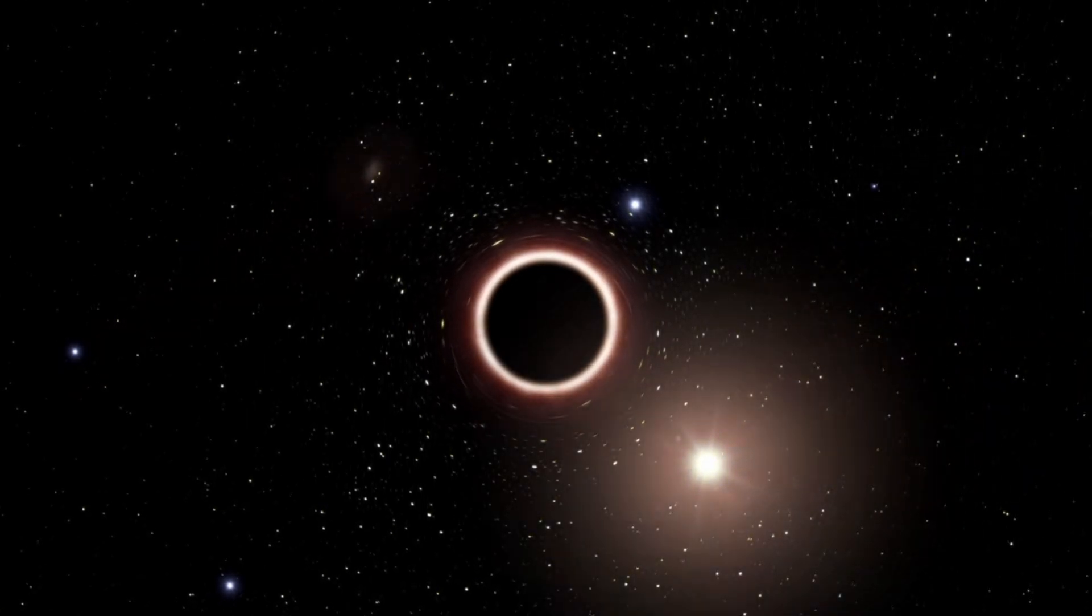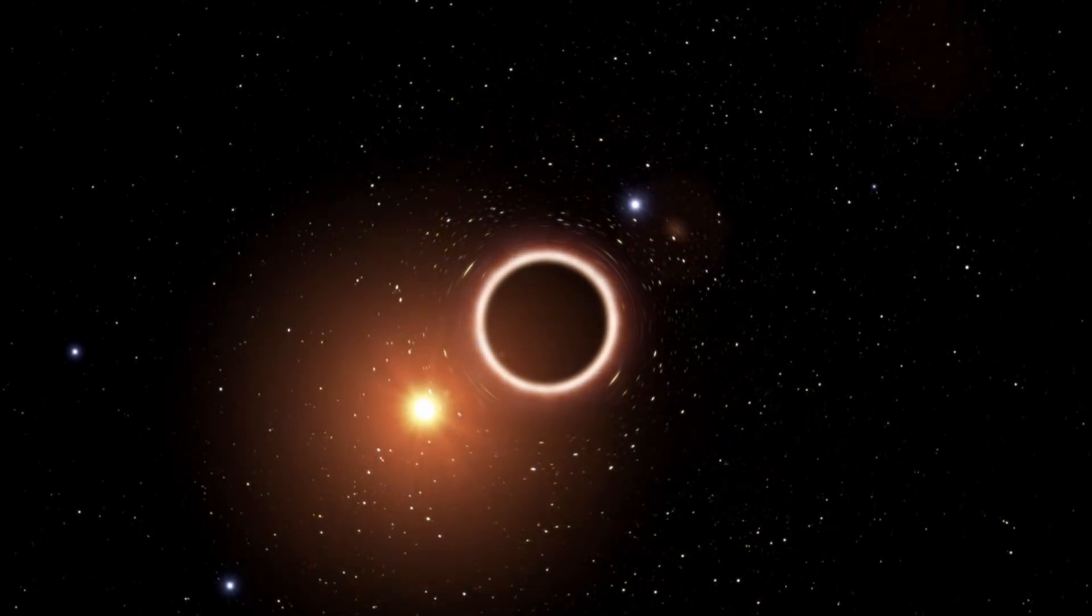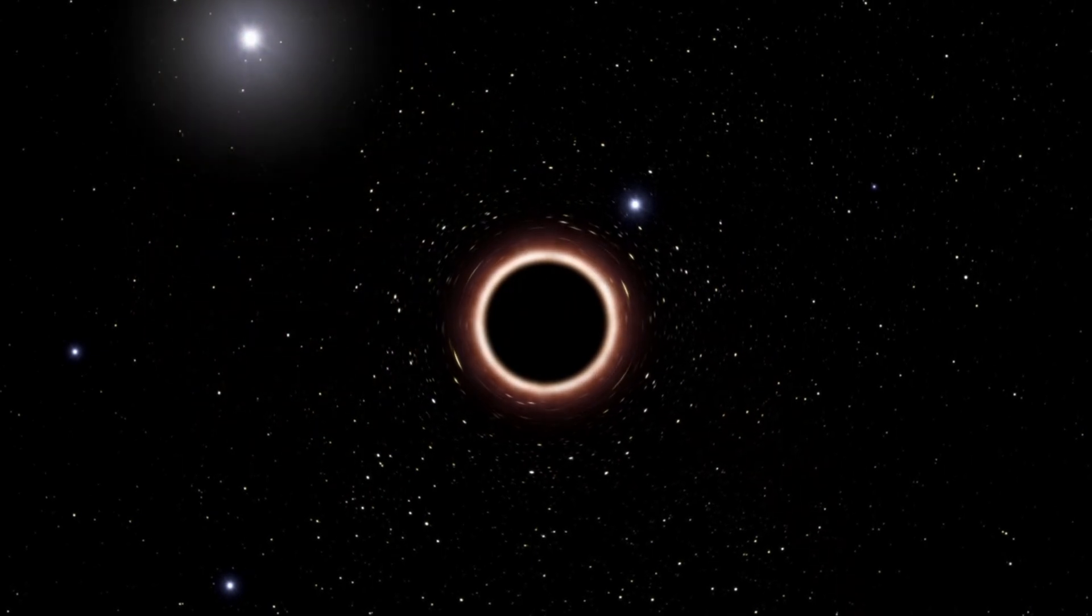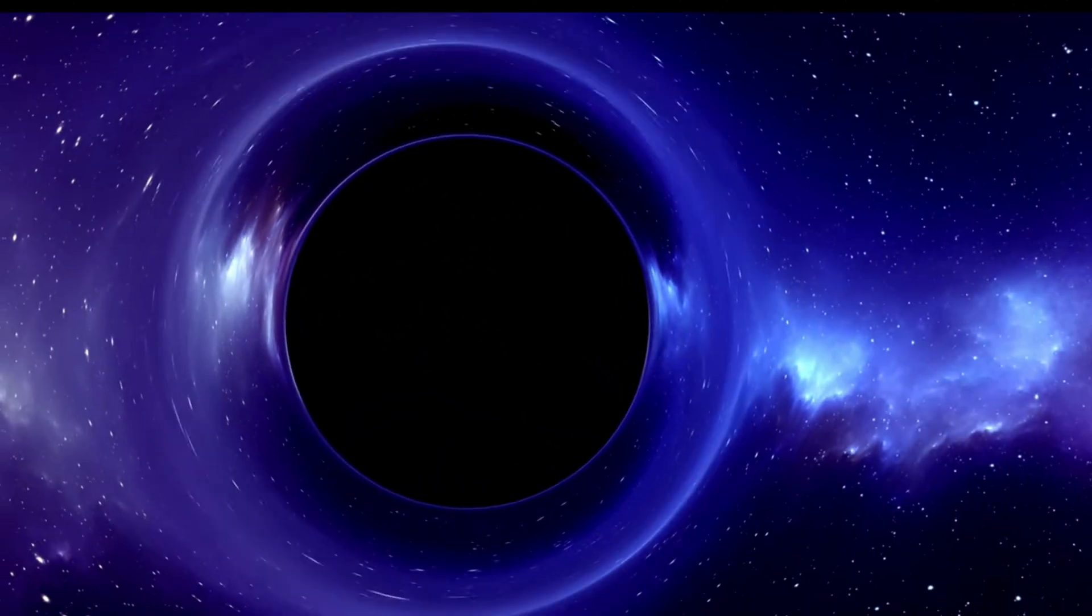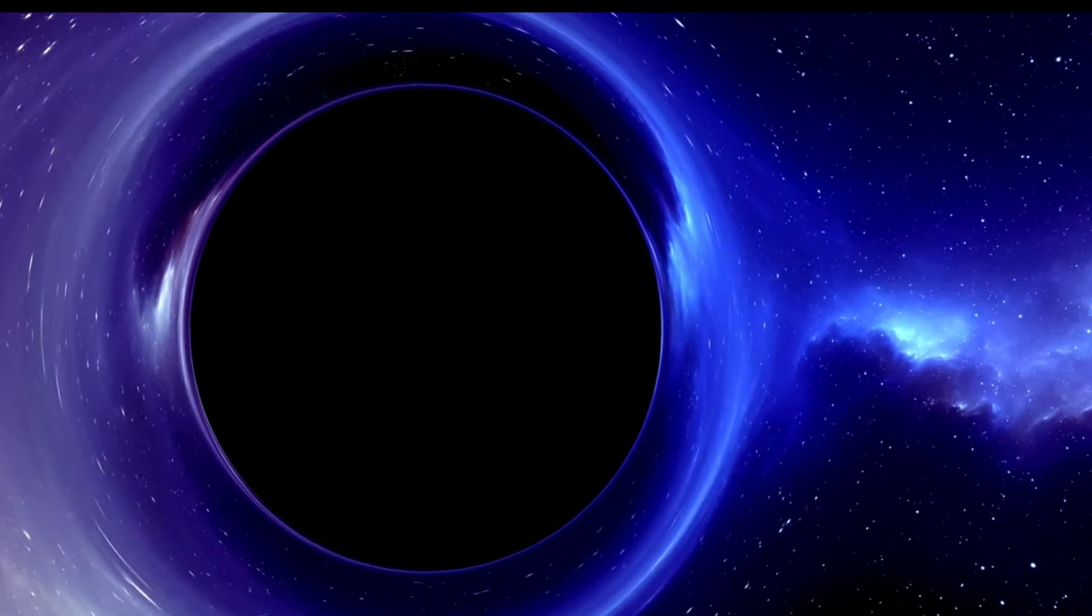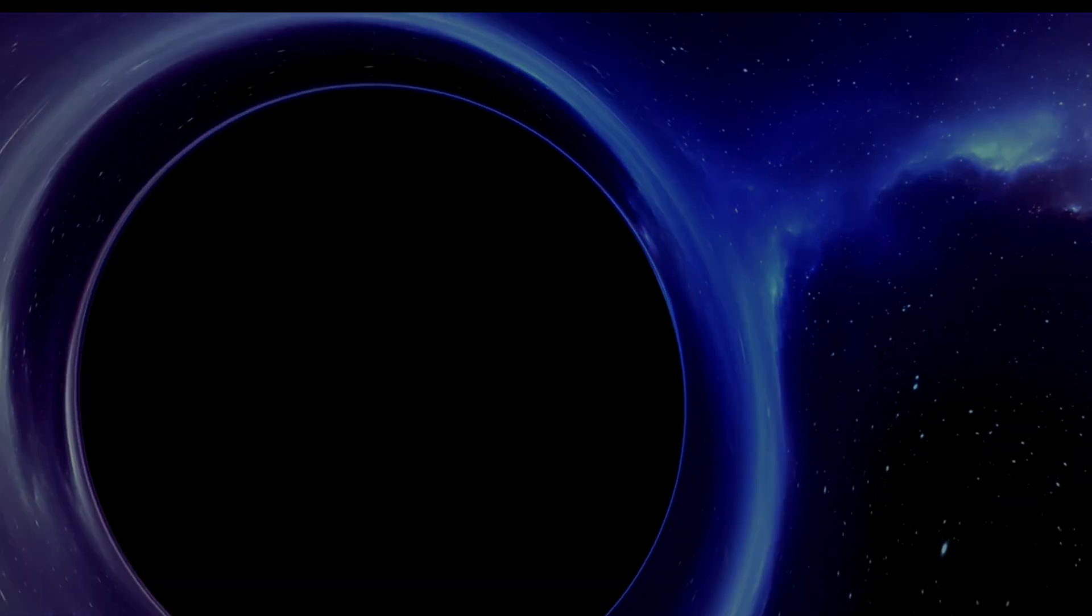The introduction of a black hole's massive gravitational pull would disrupt the harmonious dance of the planets around the Sun. This disruption could lead to erratic orbits, increasing the likelihood of catastrophic collisions between planets or with asteroids and comets. The stability we rely on for our seasonal cycles and climate regulation would be irrevocably lost.